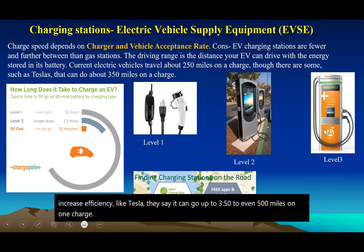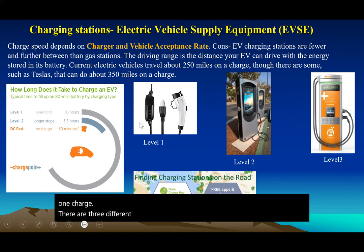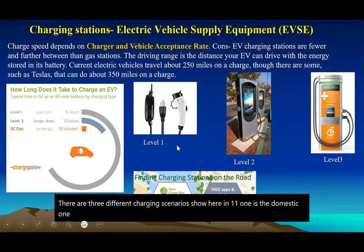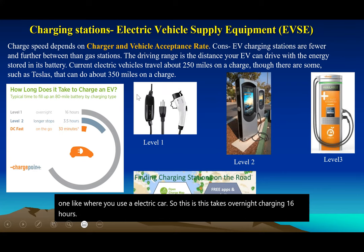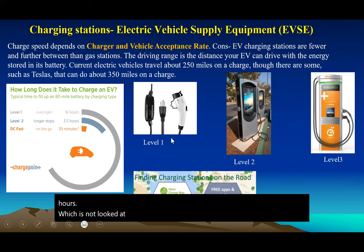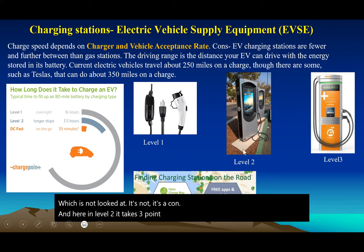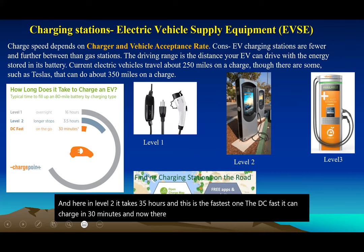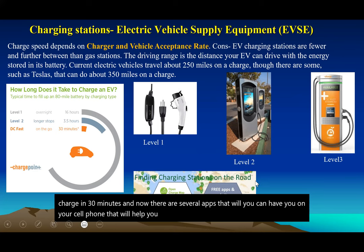There are three charging scenarios: Level 1 is domestic home charging, which takes about 16 hours overnight — considered a drawback. Level 2 takes about 3.5 hours. The fastest is DC fast charging, which can charge in 30 minutes. There are also several apps available on your cell phone that help you find the closest charging station.